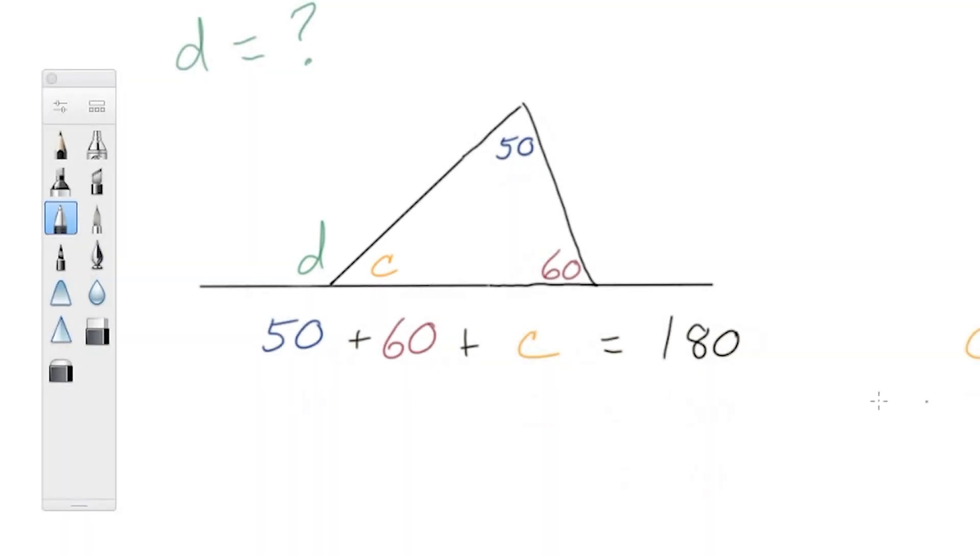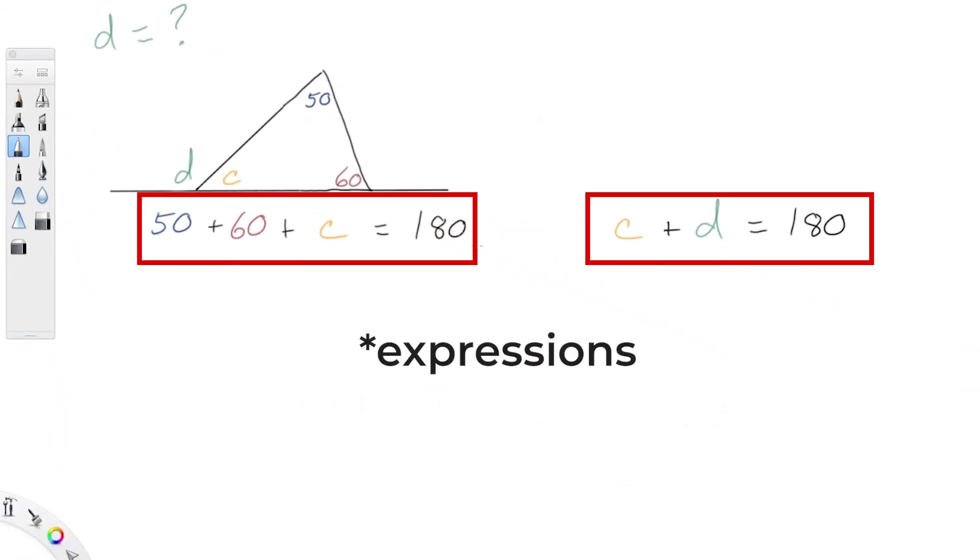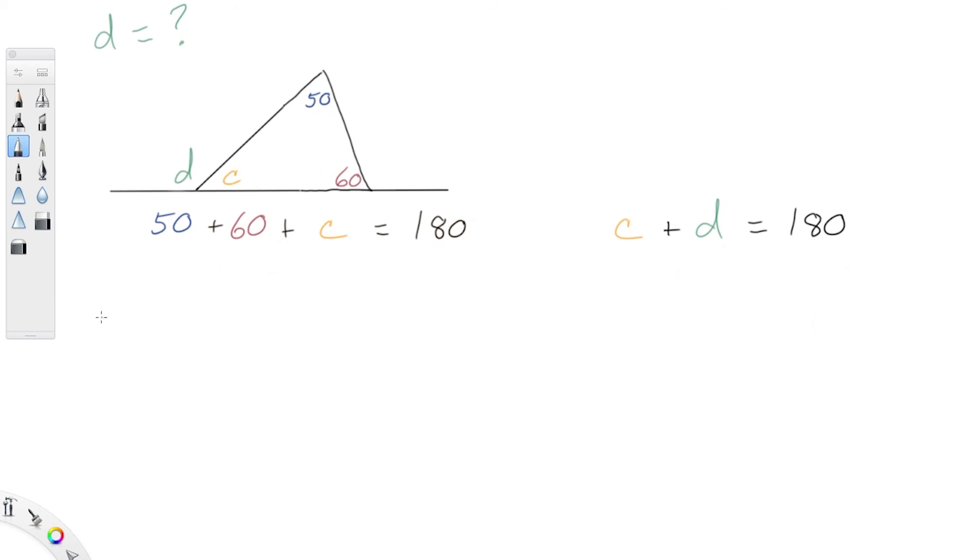Well, the thing to notice here is that we have two equations that are equal to the same thing. And so if two equations are equal to the same thing, that means that they are equal to each other. So we could rewrite these as 50 plus 60 plus C equals C plus D. And now what do we have here? Well, we have C on both sides, so we can subtract C from both sides, which will leave us with 50 plus 60 equals D.